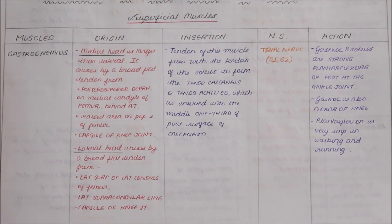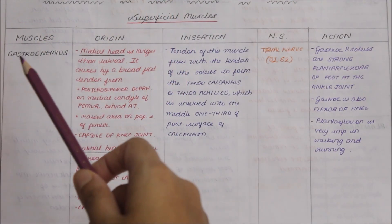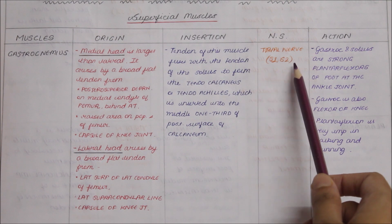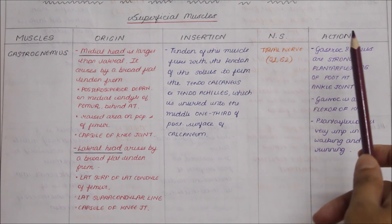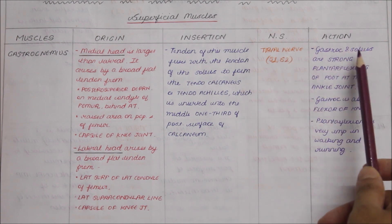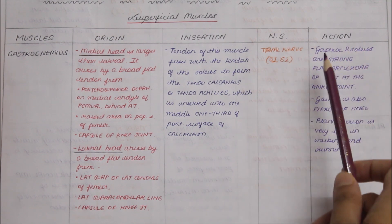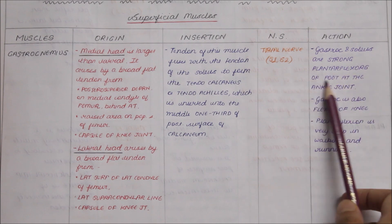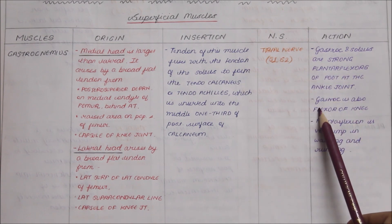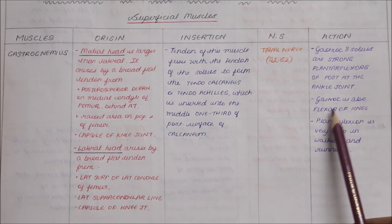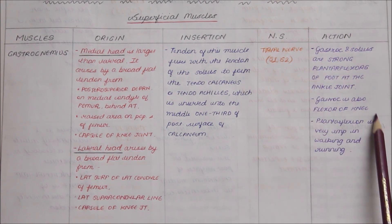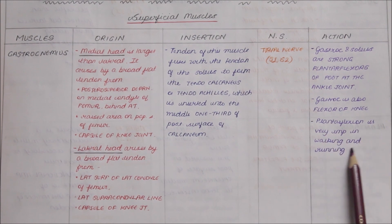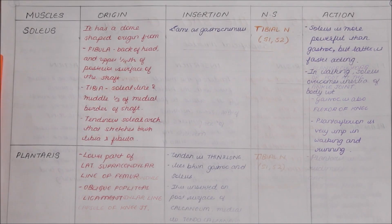Moving on to the nerve supply, the gastrocnemius is supplied by the tibial nerve. Its action is that the gastrocnemius and soleus are strong plantar flexors of the foot at the ankle joint. The gastrocnemius is also a flexor of the knee. Plantar flexion is very important in walking and running.